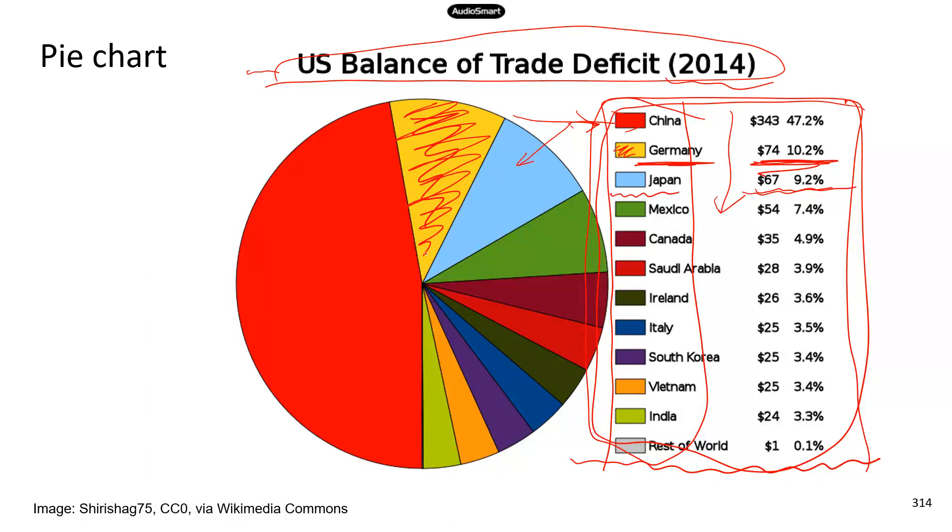My next question is, what's the balance of the trade deficit between US and Italy? Three seconds. So you need to go to the legend, and then you find Italy, and then the numbers are right here. So this is $25, the absolute number, absolute deficit in dollar, and also the percentage, among the overall trade deficit to all the countries. So that's the information over here.